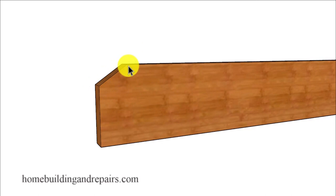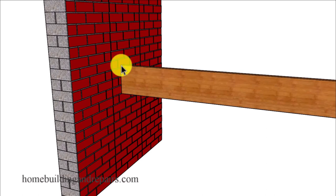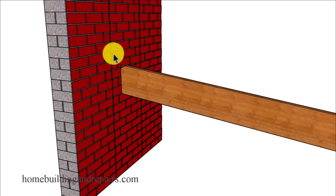I couldn't find any specifications to provide you with the exact angle. However, the angle will need to be enough so that when the joist starts to pull away from the wall during a fire, it won't create any structural problems for the brick.